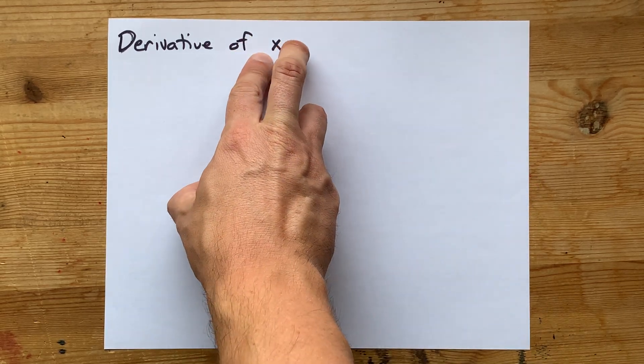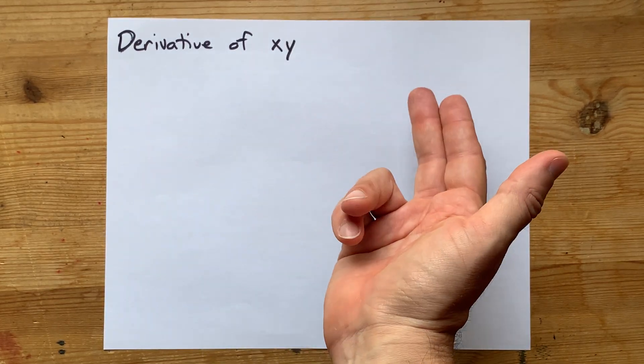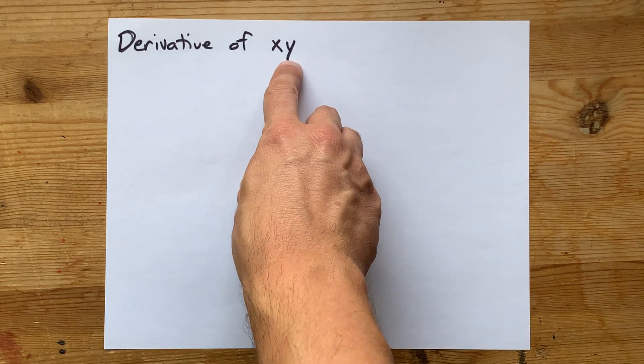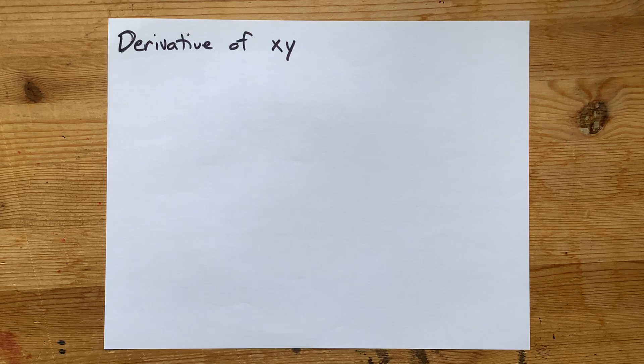So you have two functions that are being multiplied by each other here. That means we're going to need the product rule, and because y is in that equation, we're going to need implicit differentiation.